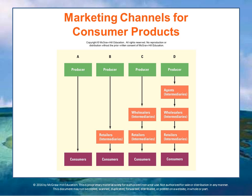In every case, people have to make money along the way. You have to be ready for a significant difference between the end-user price and the producer price when going through these channels. As a rule of thumb, think of the price doubling at each step: something you make for $5 might sell for $10 from the producer, $10 from the agent, $20 from the wholesaler, and $40 from the retailer. There's a lot of value used up in the marketing chain.